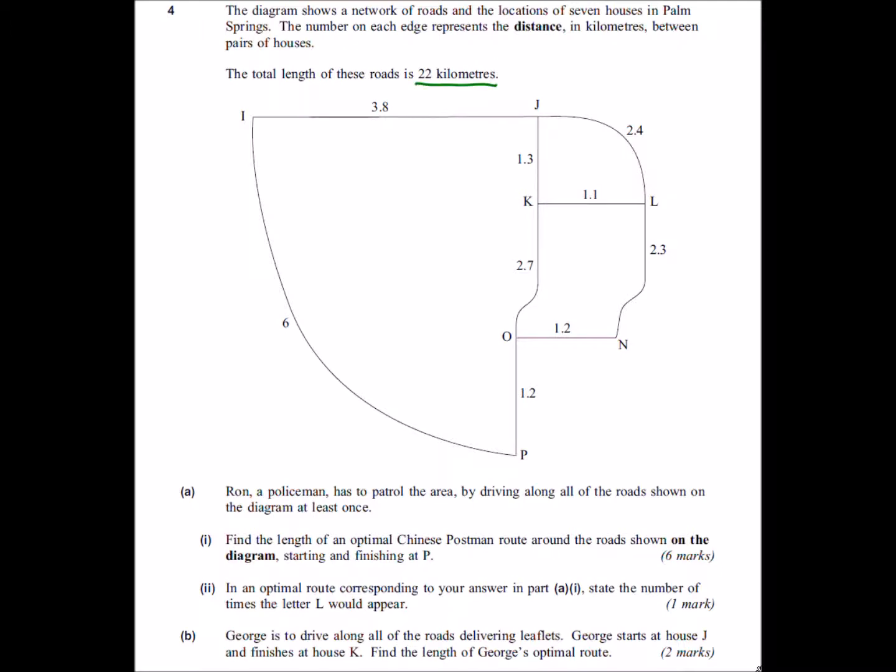This bit of information is going to be really useful to us at the end. Part A says Ron the policeman has to patrol the area by driving along all the roads shown in the diagram at least once. Find the length of an optimal Chinese Postman route around the road shown on the diagram starting and finishing at P.